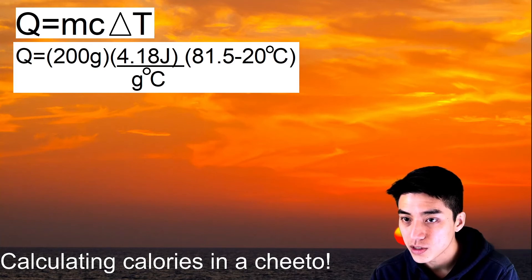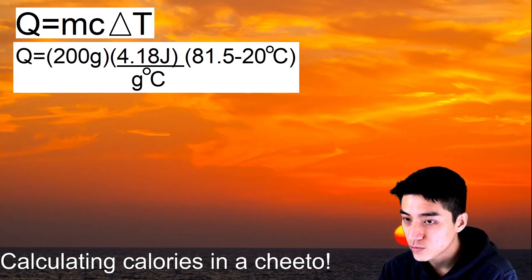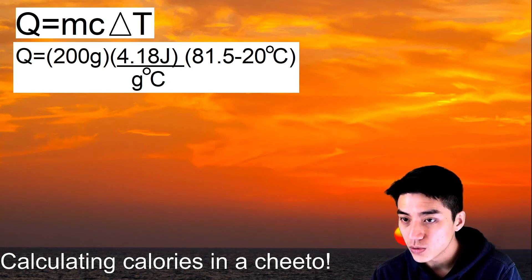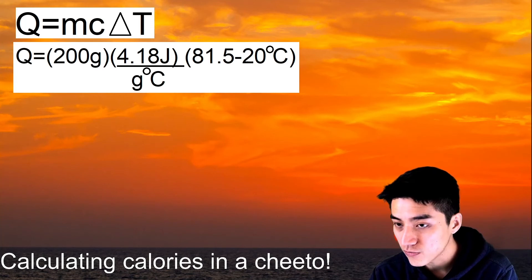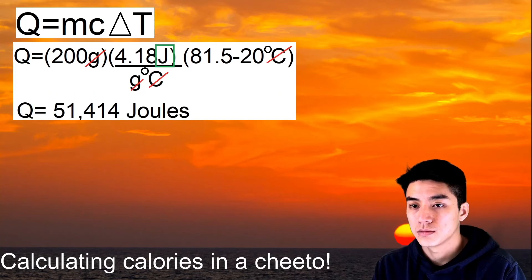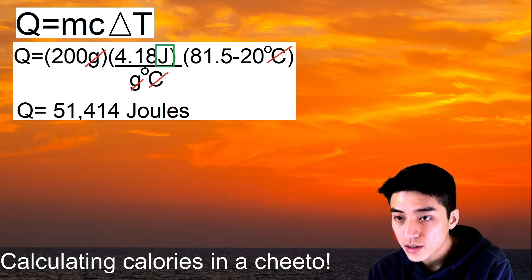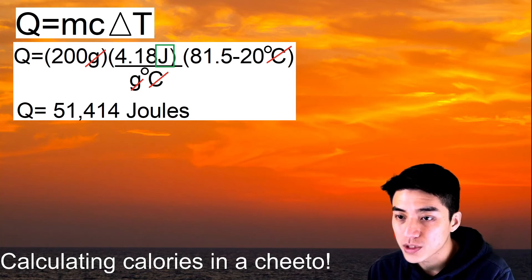For m, I plug in 200 grams. The specific heat of water is something you need to recognize and remember: it's 4.18 joules per gram per degree Celsius — the energy required to change 1 gram of water by 1 degree Celsius. For delta T, it's always T-final minus T-initial, so 81.5 minus 20 degrees Celsius. Canceling units — grams cancel, degrees Celsius cancel — I'm left with joules. Typing in my numbers, I get 51,414 joules.